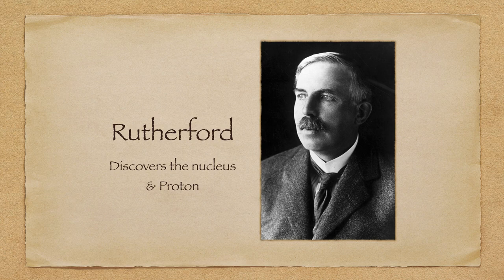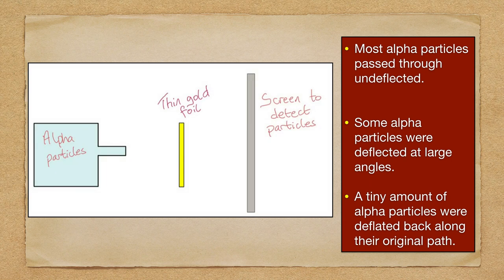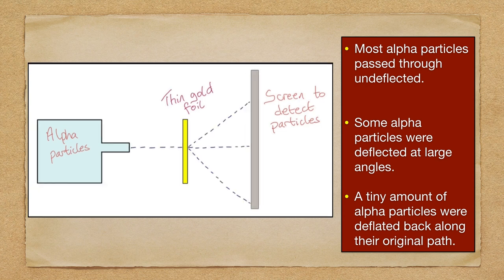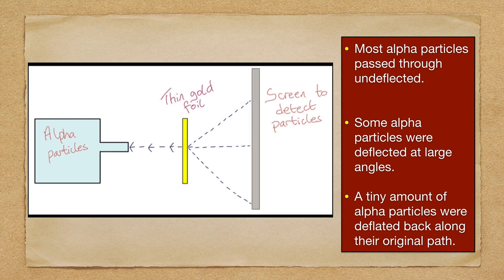Ernest Rutherford is largely credited with providing the correct structure of an atom. Rutherford bombarded a thin piece of gold foil with alpha particles, which are positively charged particles. He made three observations: firstly, the vast majority of alpha particles went straight through undeflected; secondly, some alpha particles were deflected at large angles; and most surprisingly of all, a tiny amount of alpha particles were deflected straight back. His three observations led him to make three conclusions, which are discussed in the next slide.